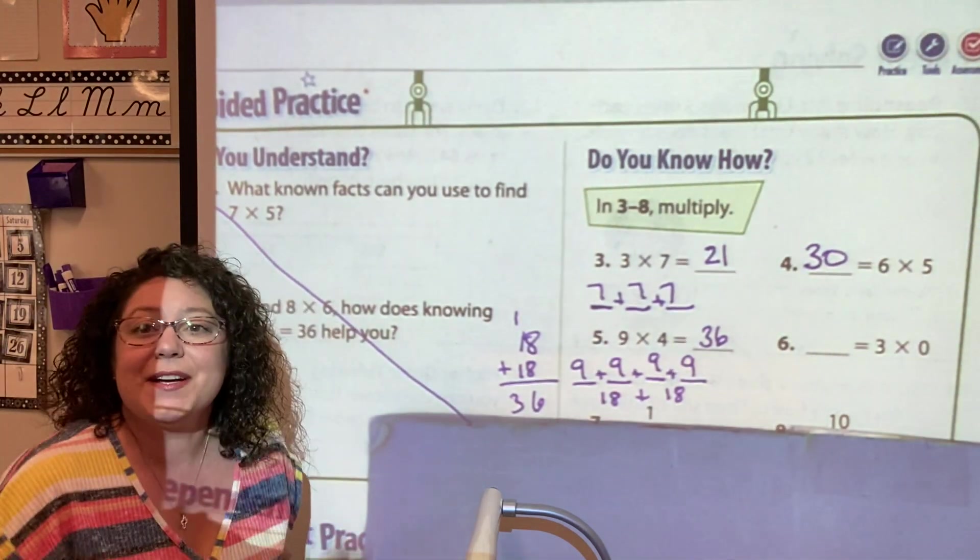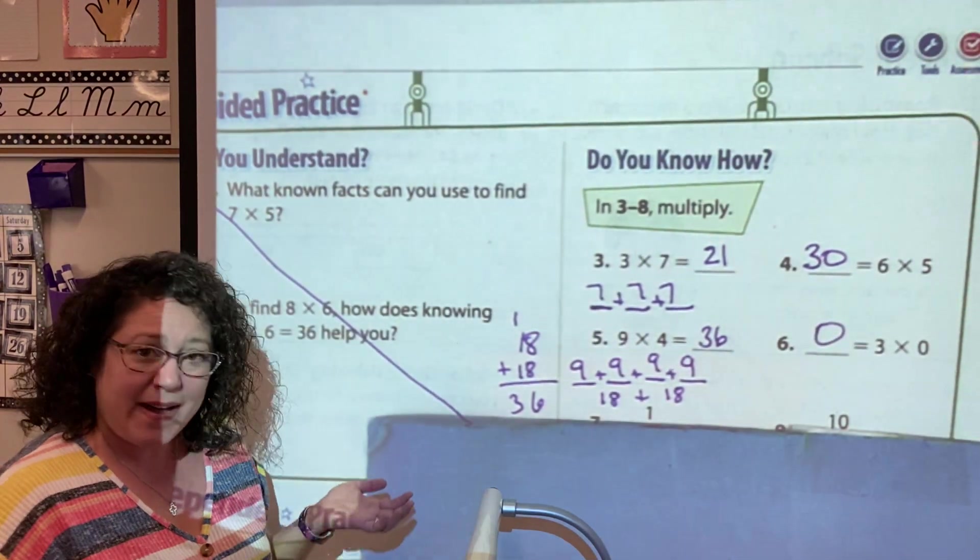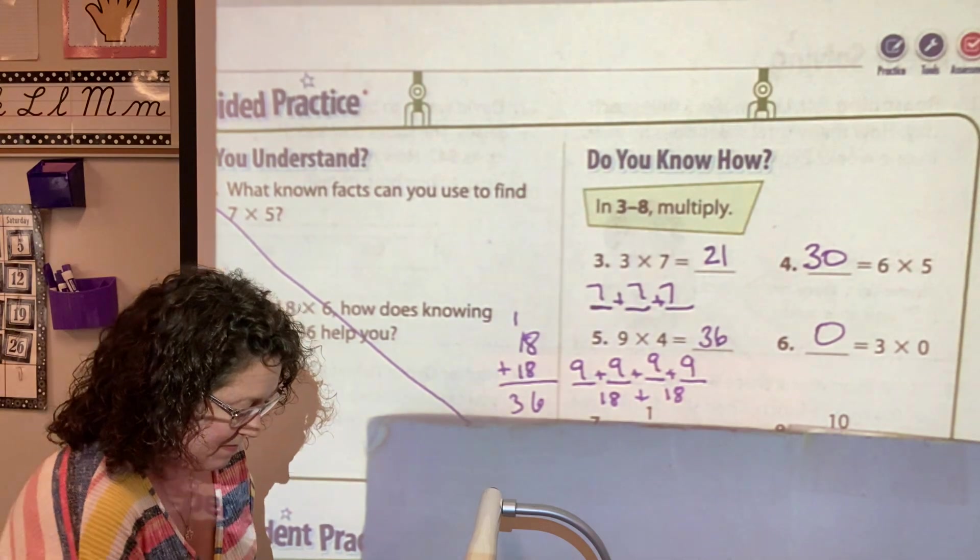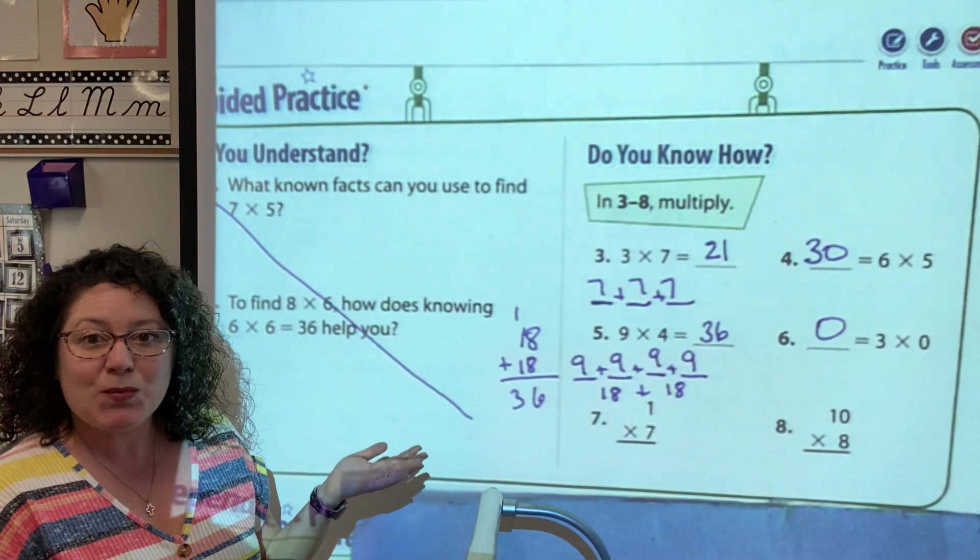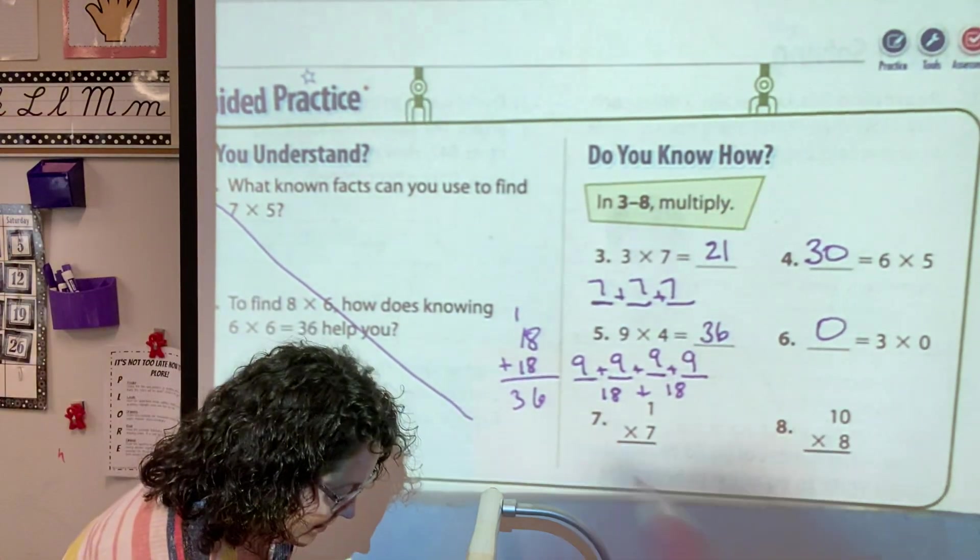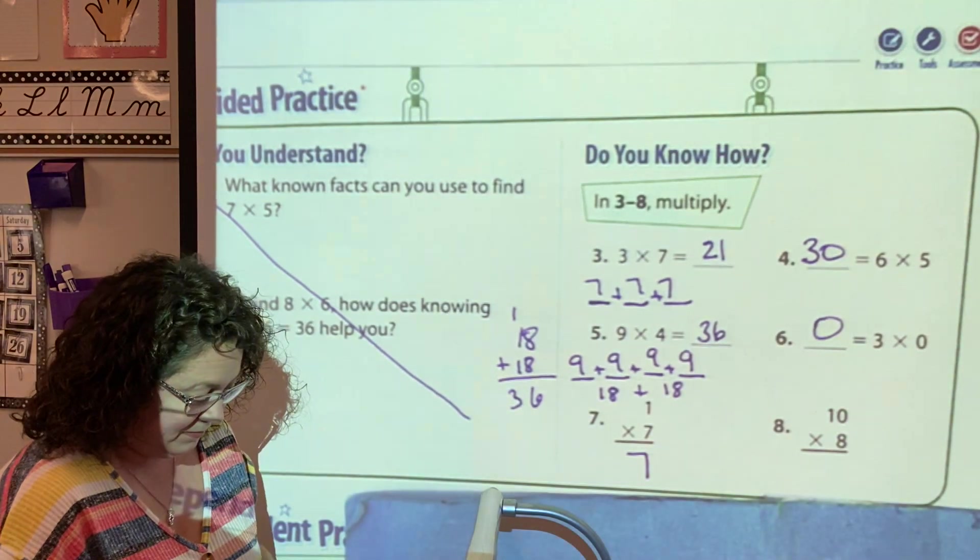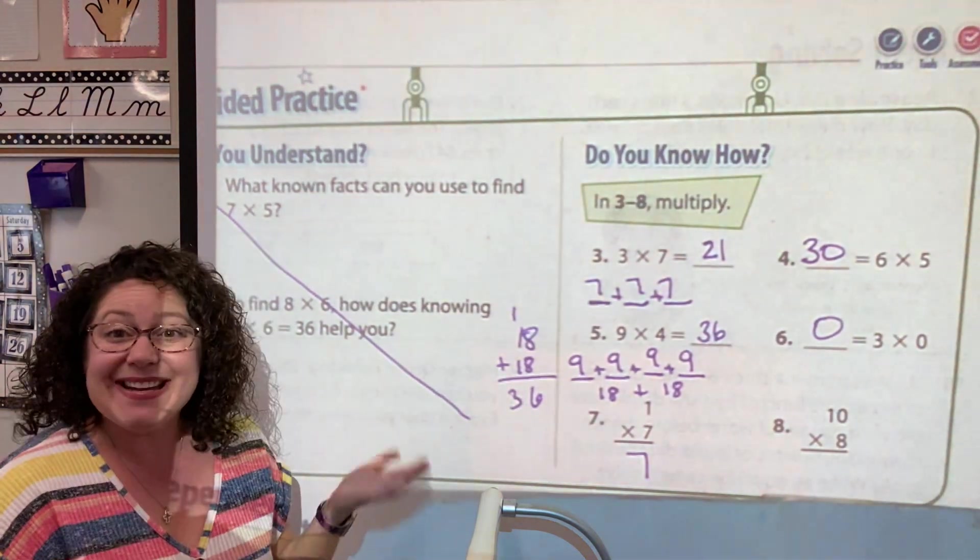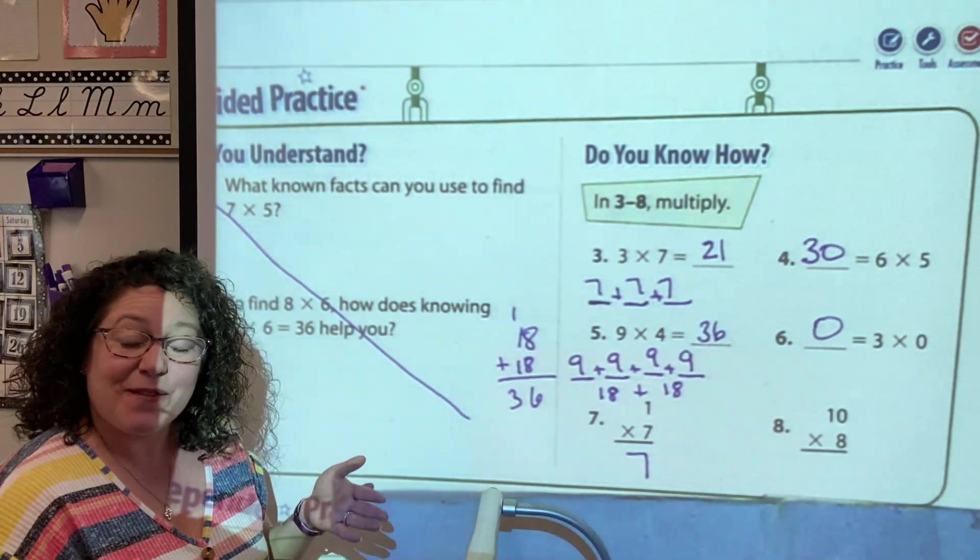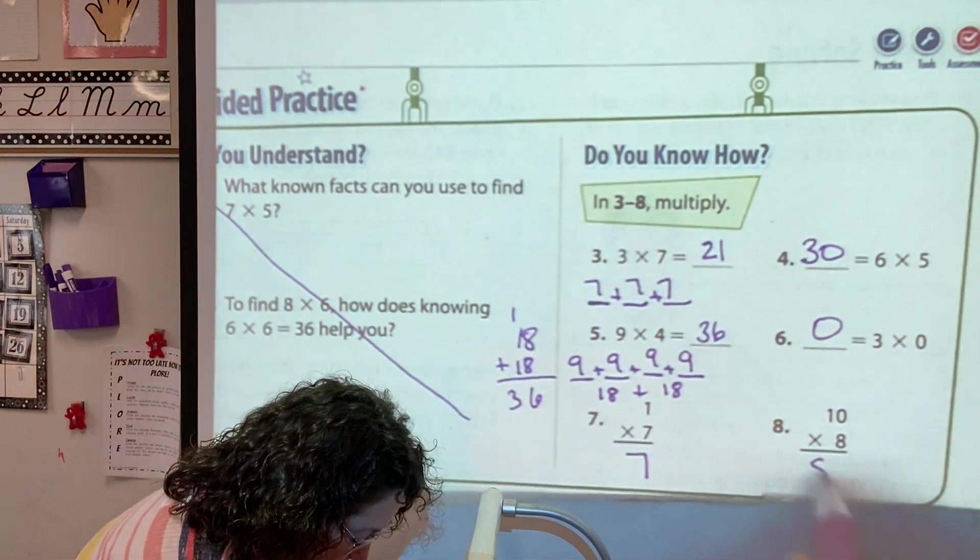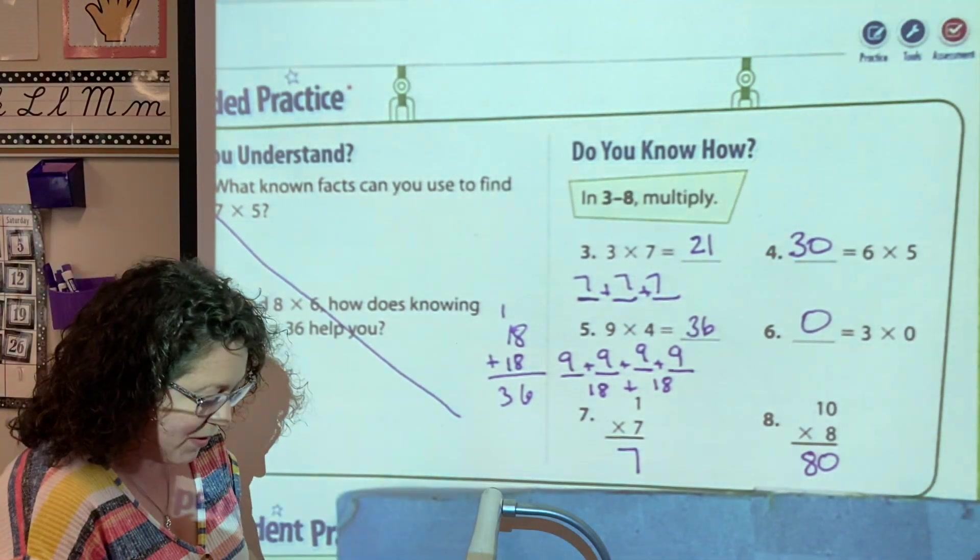Three times zero. Anything times zero is zero because it means it's zero times. One times seven. Anything times one is the other number because it means one time. And ten times eight. Anything times ten, you just take the other factor and add a zero. Look how quick and good we are getting at multiplication.